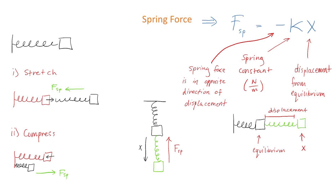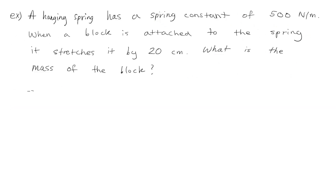So you can see the displacement and the spring force are in opposite directions. Now that we understand the spring force equation, let's do some examples to practice. Our first question says we have a hanging spring with a spring constant of 500 newtons per meter, and when we attach a block to the spring, it stretches by 20 centimeters.